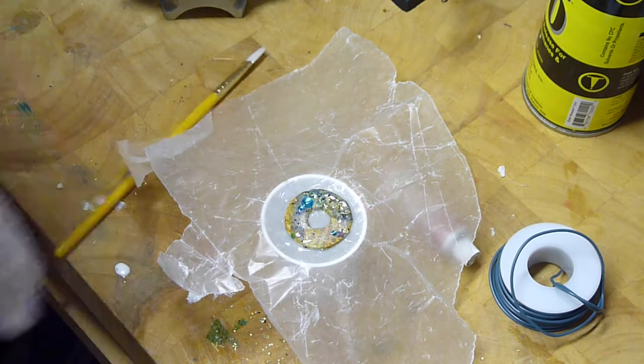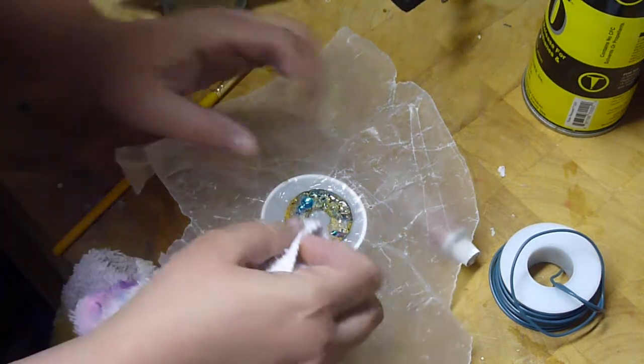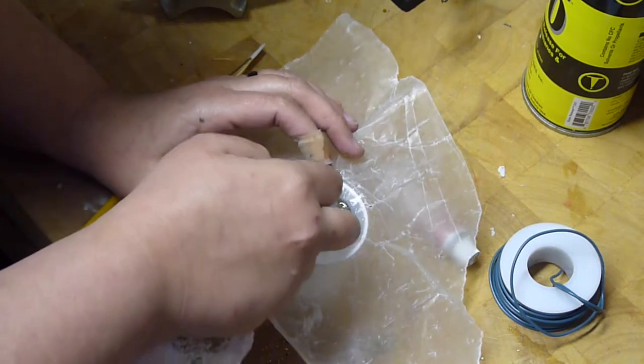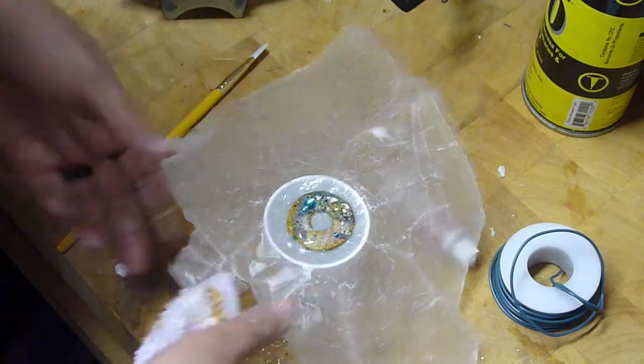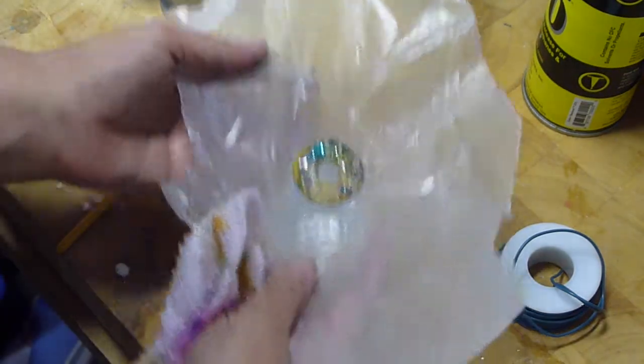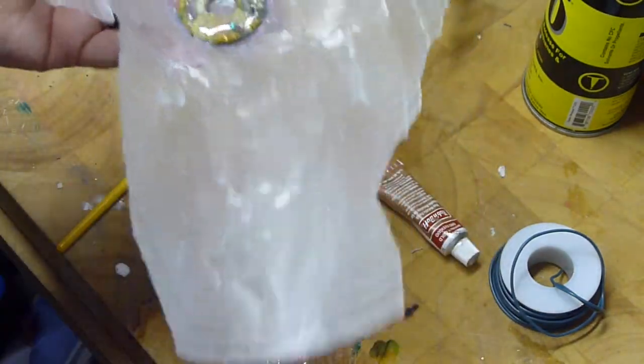But there you go. You just let that dry 24 hours and wipe off any excess that you might have. And you just do the same exact thing to the other side and then your pendant will be finished.